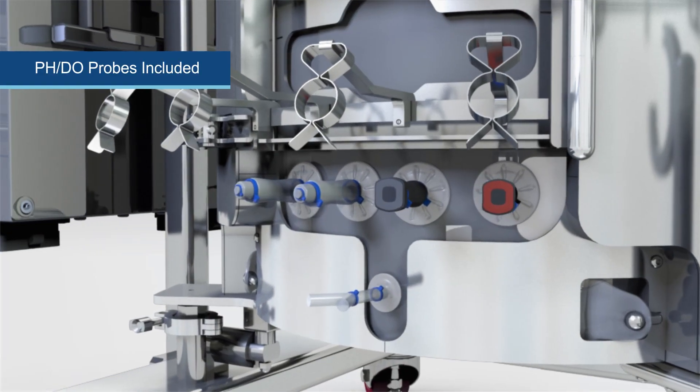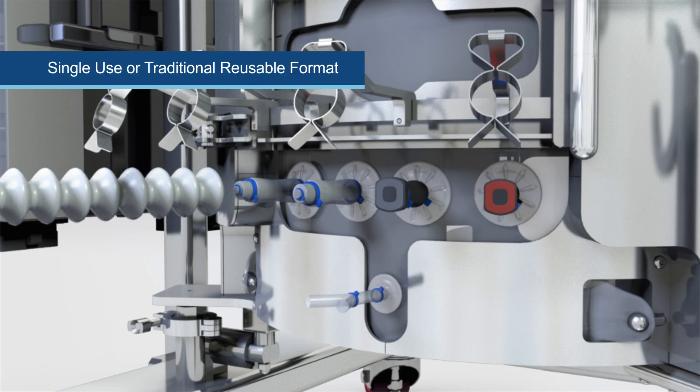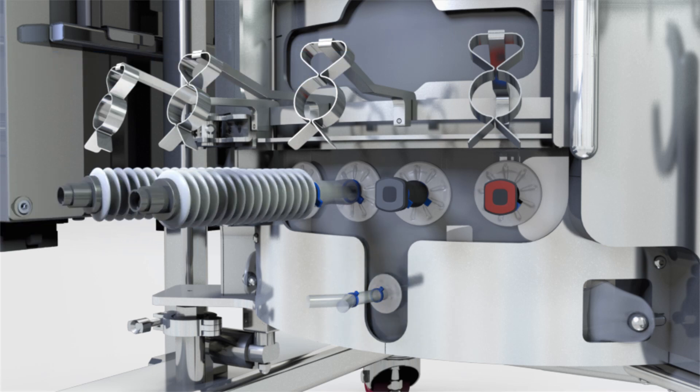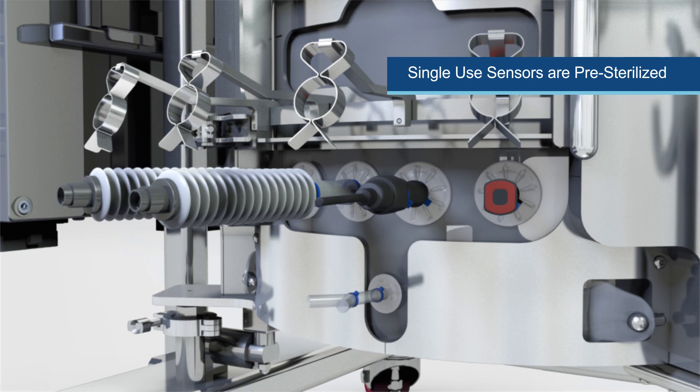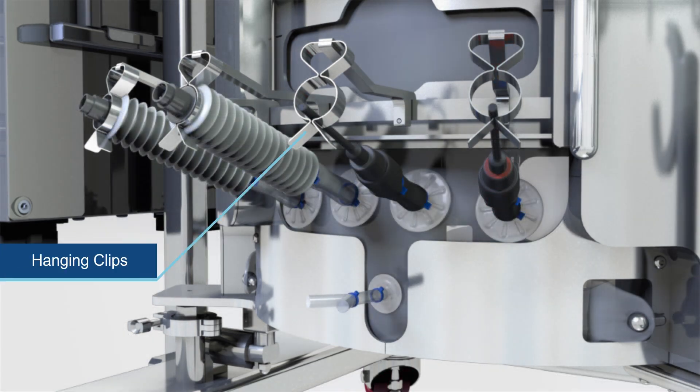pH and dissolved oxygen probes are included in either single-use or traditional reusable format. Reusable probes are inserted using an autoclavable probe assembly and the single-use sensors are pre-sterilized using gamma irradiation in the disposable reactor, providing a closed system that is ready to use. Hanging clips hold the probes at the correct angle and position during operation.